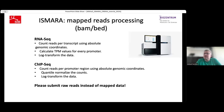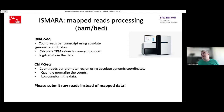It's also possible to upload mapped reads in BAM or BAT format. In this case, we use absolute genomic coordinates to count reads in the transcripts, then calculate TPM values for every promoter, log transform the data, and process it. We strongly recommend, if you have a choice, to submit the raw data instead of mapped data, to keep consistent processing within the ISMAR pipeline.